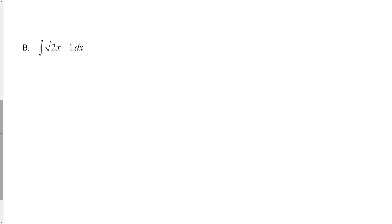Let's look at another example: the integral of the square root of 2x minus 1 dx. There's no algebra I could do to apply the power rule directly, so substitution is necessary. What I have to do is pick some part of the function whose derivative looks like another part. In this case I would choose u to be the part underneath the square root, 2x minus 1, because the square root is the thing I need to simplify. The derivative of u would be du = 2 dx.